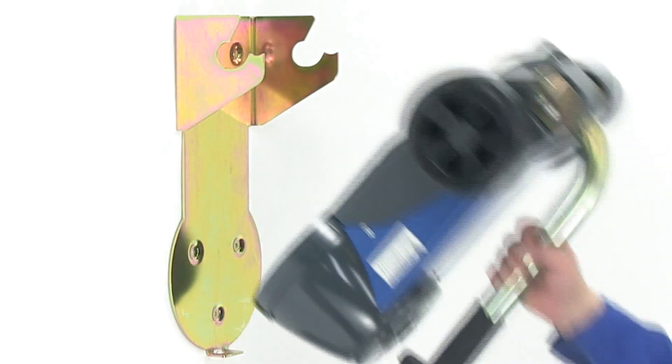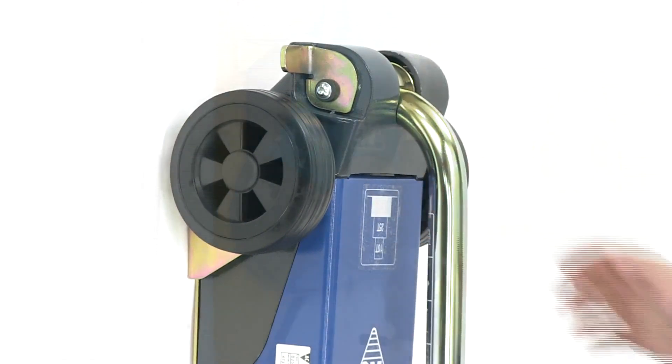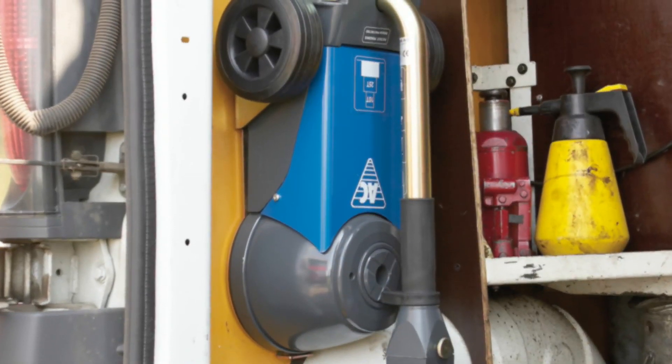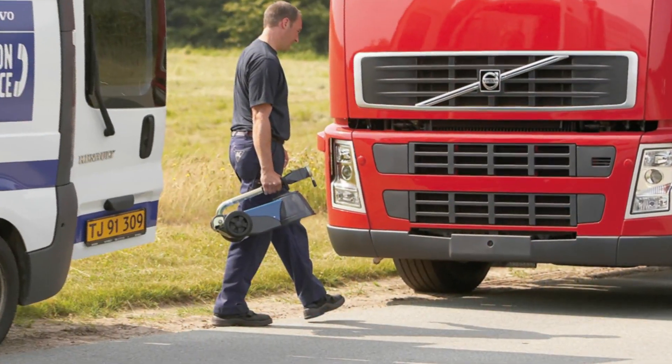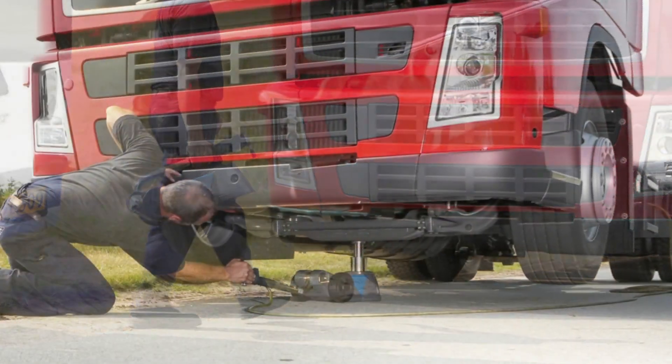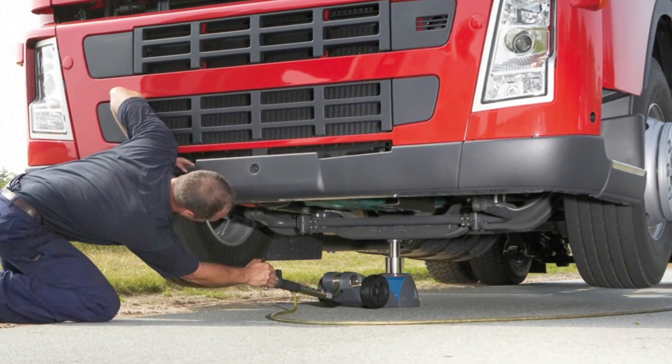You can purchase a special suspension bracket separately to ensure safe transportation in the service van. Thanks to the low minimum height of 161 millimeters, you can easily place the jack under vehicles such as lorries and buses.